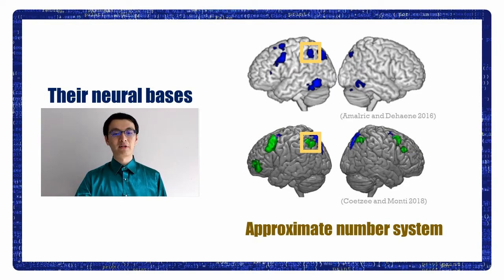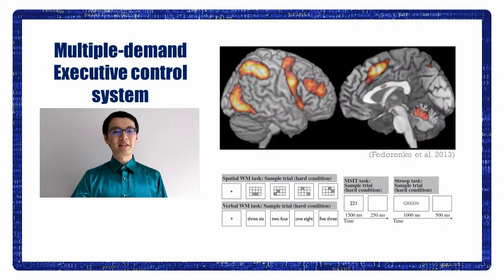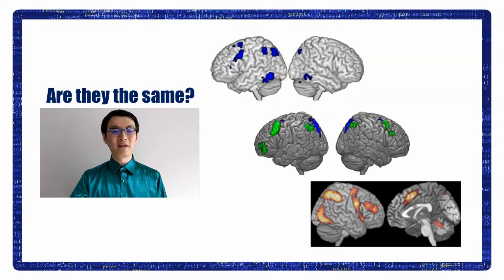So, one hypothesis goes that the neural basis of both math and logic are recycled from the approximate number system. But the activation pattern for math and logic also looks like the multiple-demand executive control system found independently in another series of studies. This multiple-demand system is activated in many different cognitively demanding tasks such as verbal or spatial working memory tasks, the Stroop task and the multi-source interference task.